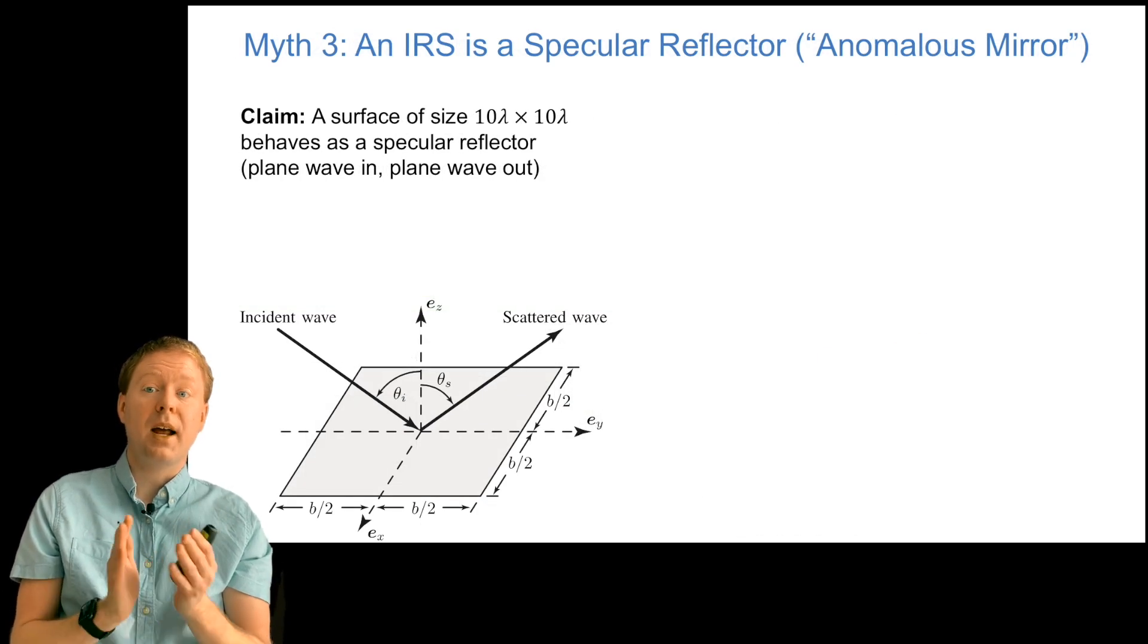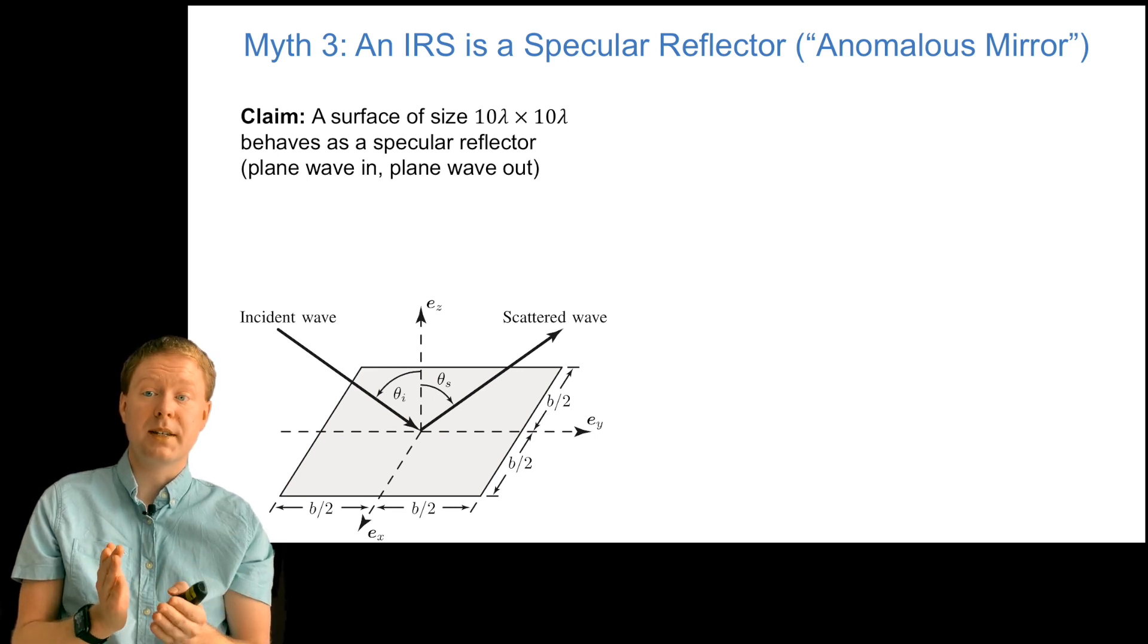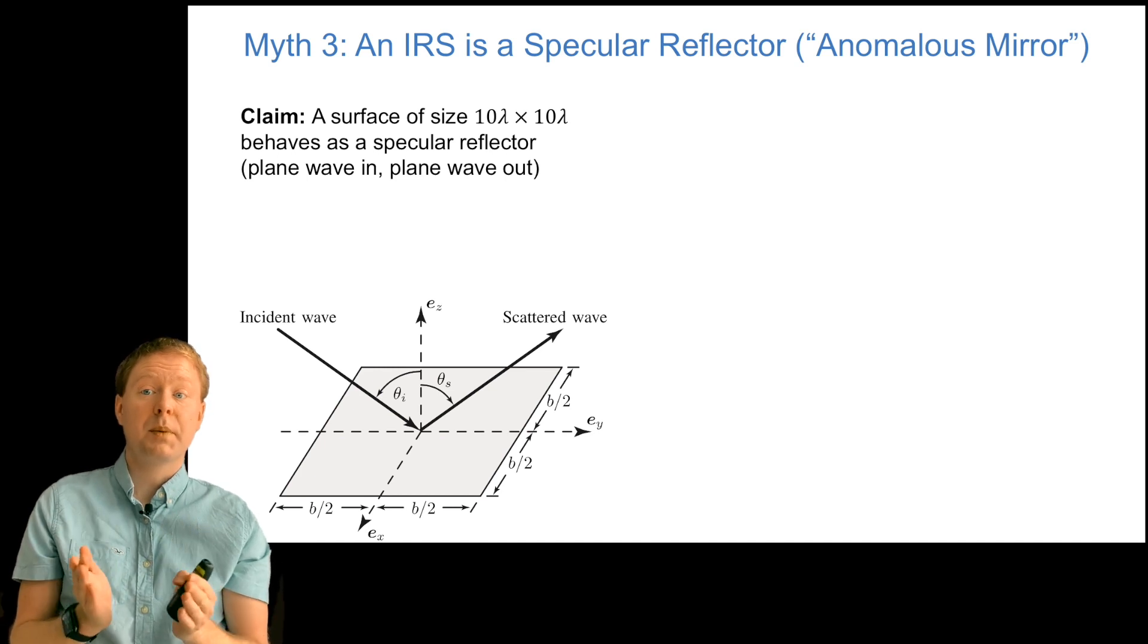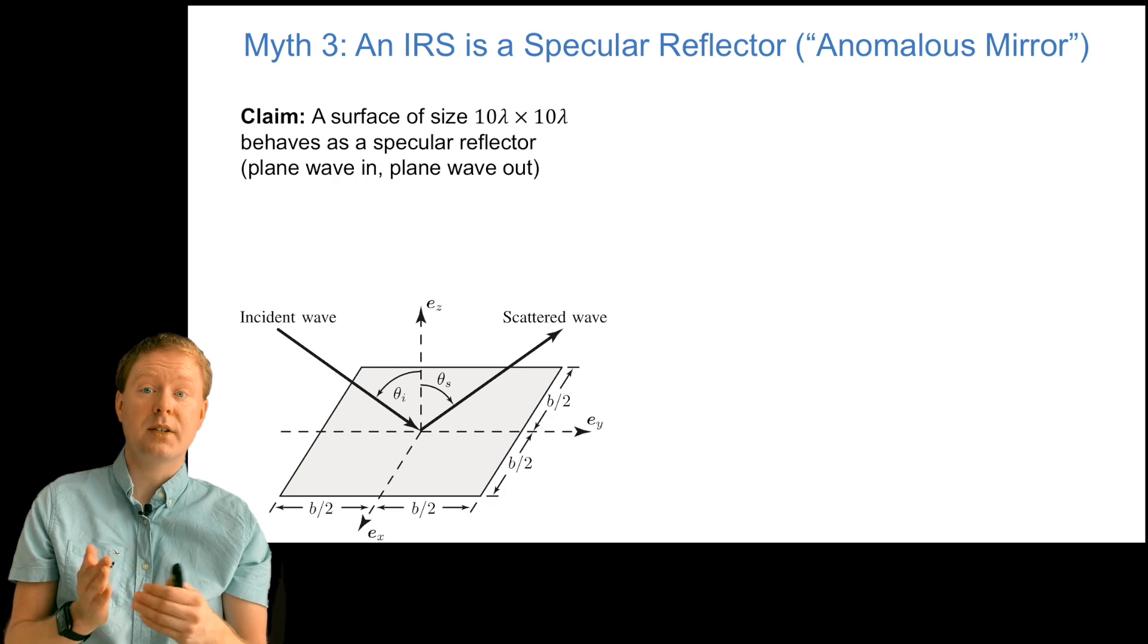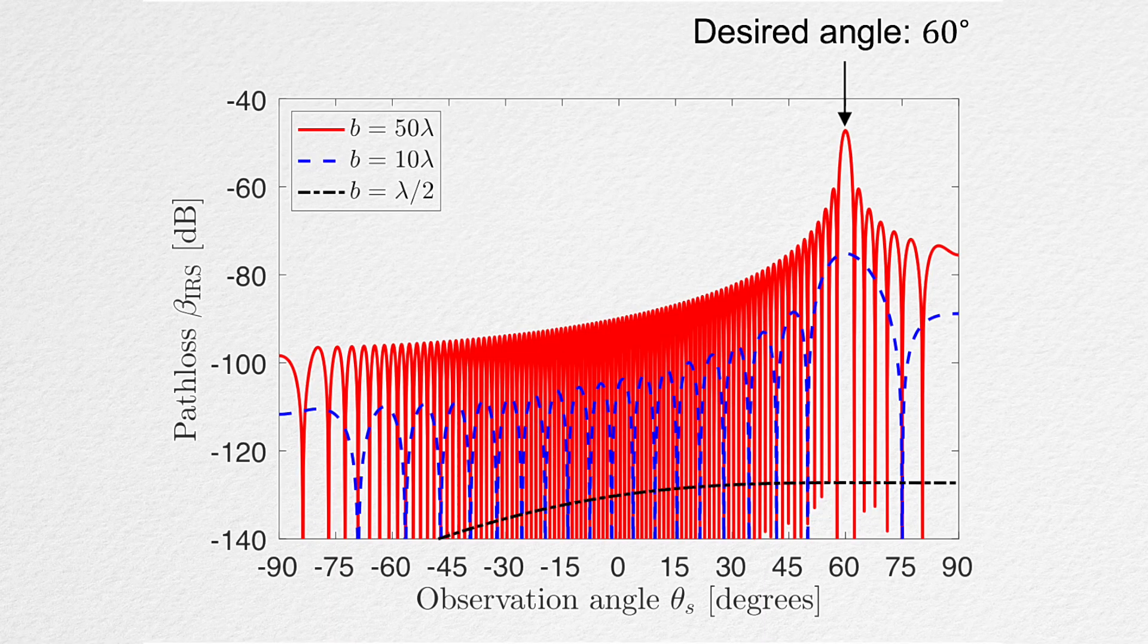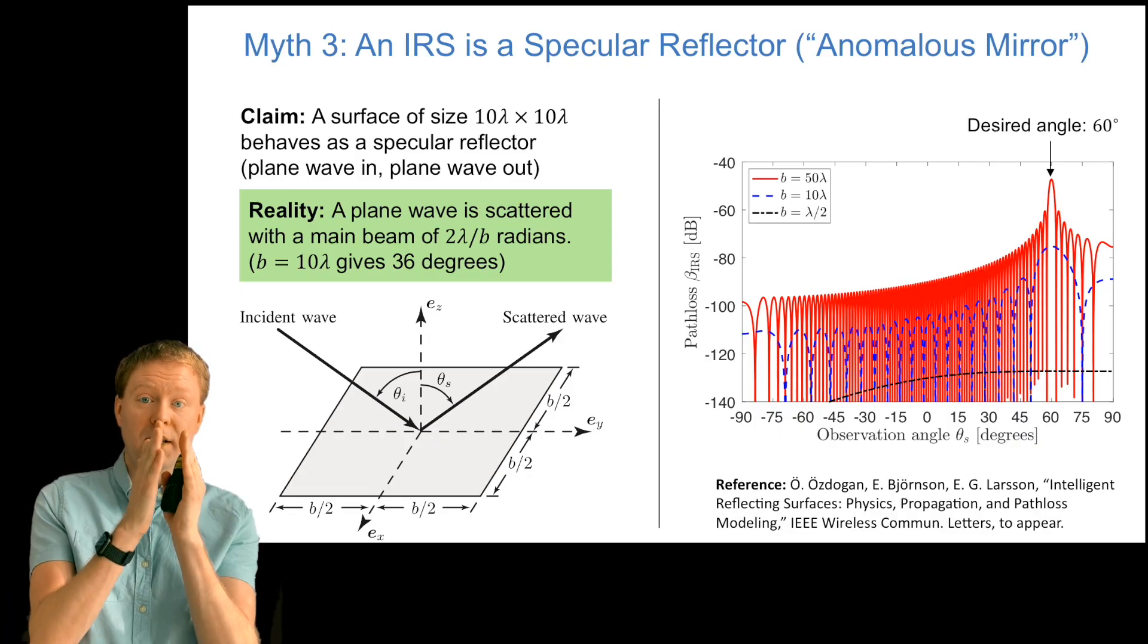The third and final myth is that an IRS works as a specular reflector, an anomalous mirror, which means that the signal goes in. If it's a plane wave, we will have exactly a plane wave that goes out again. For example, people have been claiming that if you just have a surface that is 10 lambda times 10 lambda, it will behave like this. But if you simulate it, you see that it's not the case. This figure is showing the path loss or channel gain in different observation angles when the incoming wave is a plane wave with 60 degrees angle. We see that the scattered wave also has its largest value at 60. But if it were a plane wave that was going out, then we will only have something at that angle. Here we see a lot of power at other angles as well. In particular, if we look at the blue curve, which is a 10 lambda times 10 lambda plate, then we have a 36 degrees beam width here. Even if you go up to 50 times 50 lambda, you still have a beam width.